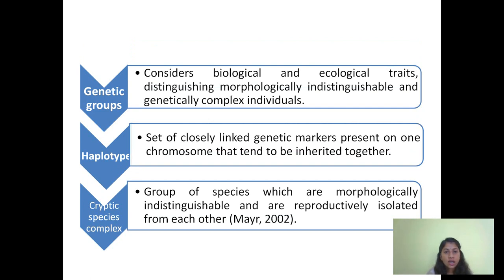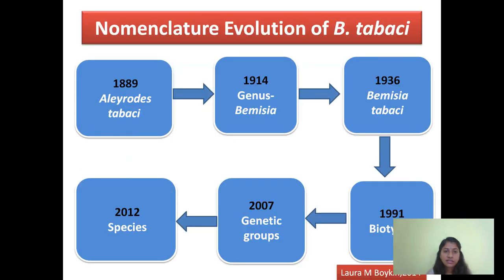Genetic groups are those which have the capacity to differentiate genetically complex individuals. Haplotypes can be defined as the set of closely linked genetic markers present on one chromosome that can be inherited together. Cryptic species complex are a group of species which are reproductively isolated from each other.